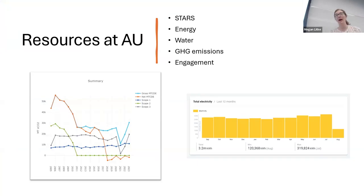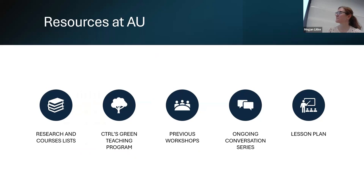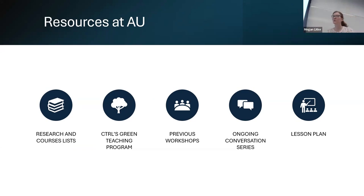We also have data on our engagement activities, so if students are interested in learning about outreach and the psychology behind how we reach students, we have all that information about who we've reached and programs we've used. We've worked with psychology classes to figure out better ways to reach students. Our research and course lists are also a great tool if you want to bring sustainability in from an area where you don't have expertise — you can find a colleague to invite for a guest lecture or ask for reading recommendations.